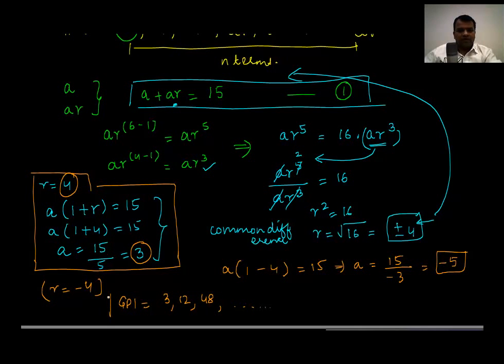But if I take the value of r as minus 4, my GP2 will have a = -5 times -4. What is the value of r which we have taken here? Minus 4. So we get -5, +20, -80, +320, and so on.